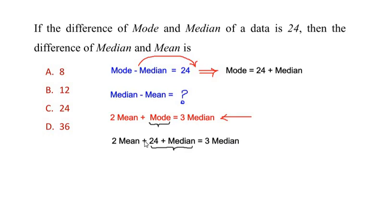So let us take medians on one side of the equation and keep the rest on the other side. 3 median minus median, that is by taking the median on this side of the equation, is equal to 2 mean plus 24 stays on the other side of the equation.